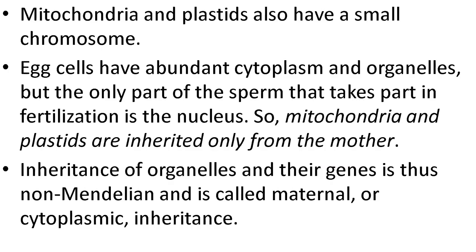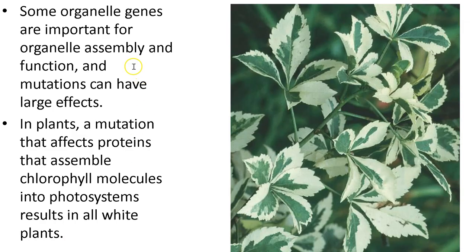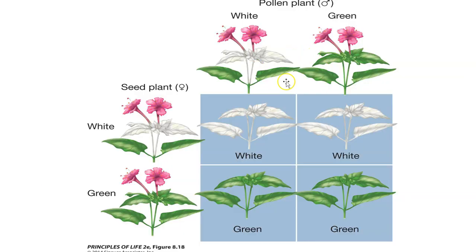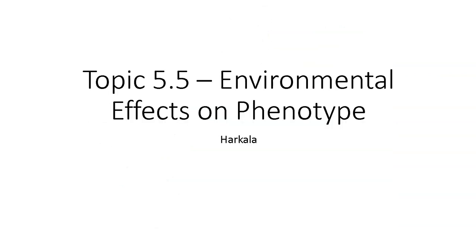Mitochondria and chloroplasts also have a small chromosome. Some organelle genes are important for organelle assembly and function. In plants, this example of mutation affects chlorophyll — you can see right there, lacking chlorophyll, no pigment. This is all about cytoplasmic inheritance. What we talked about — mitochondria and chloroplasts having their own DNA — leads us to our final discussion, which won't take very long: the environment.